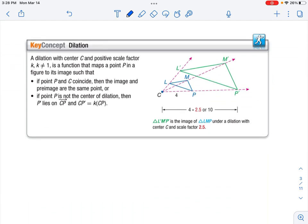So our key concept of dilation states: a dilation with center C and positive scale factor K, not equal to 1. If it is equal to 1, you're not dilating it, it's just exactly the same shape. It is a function that maps a point P in a figure to its image such that if P and our center point C coincide, then the image and pre-image are the same point. So if P was here on top of C, P' would be also in this same spot.